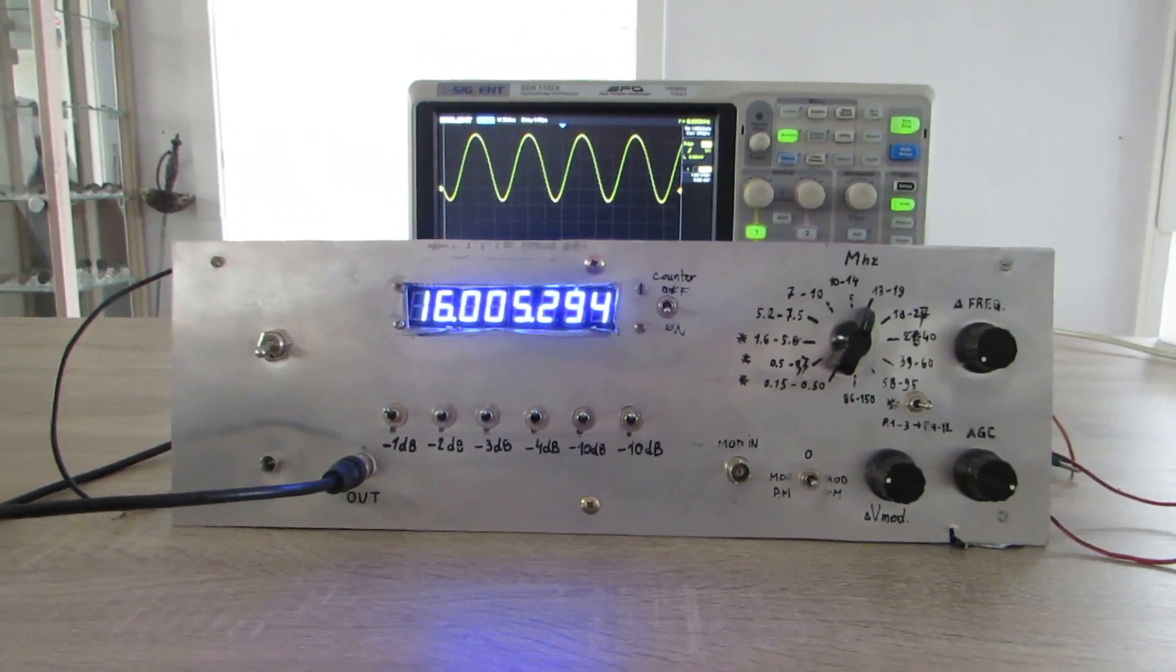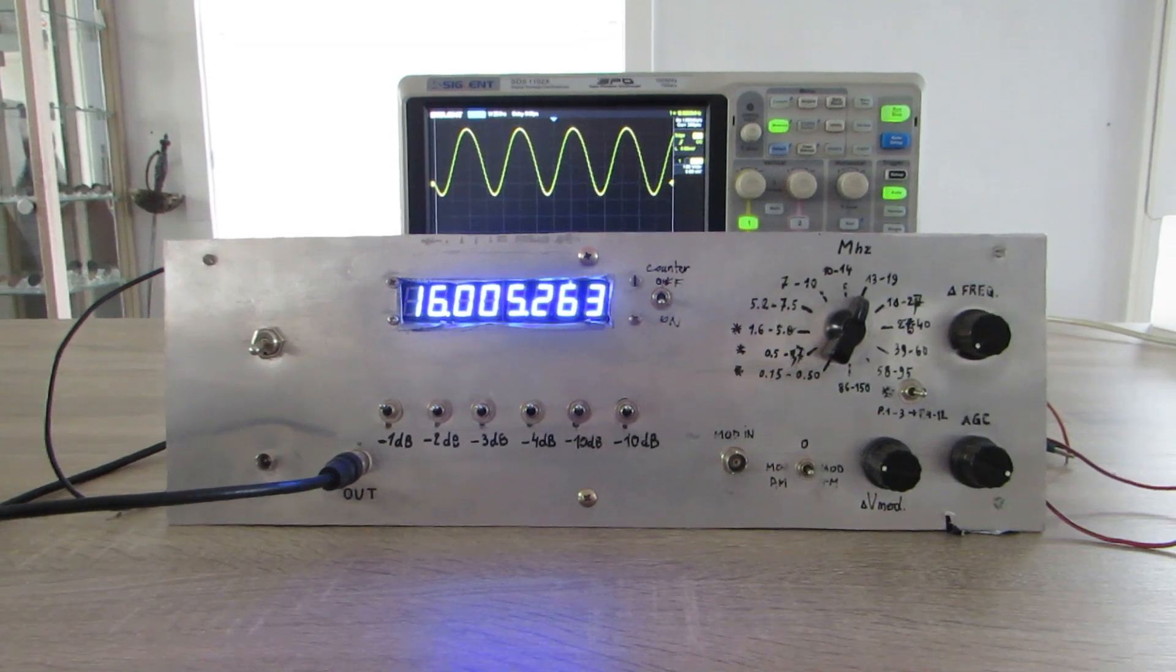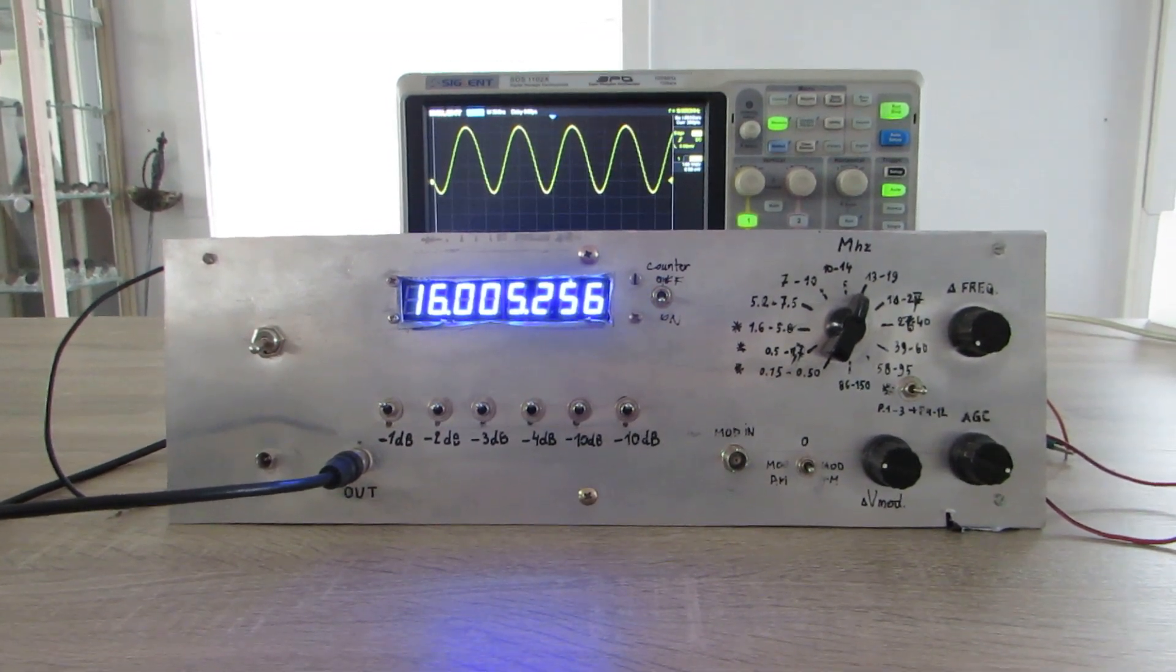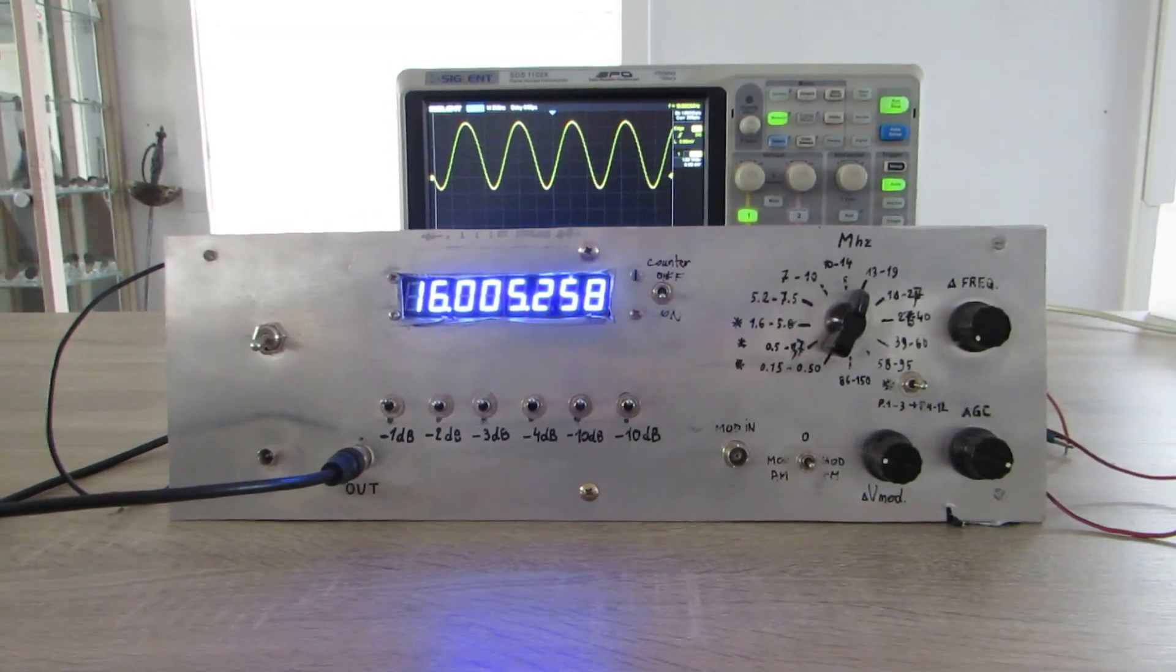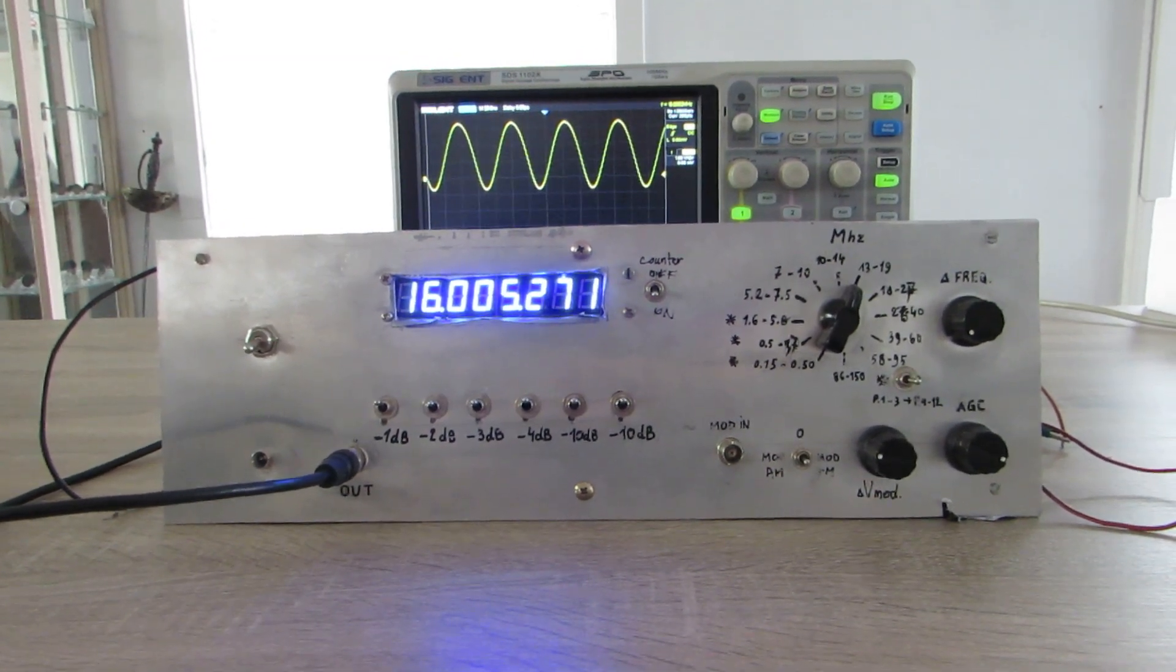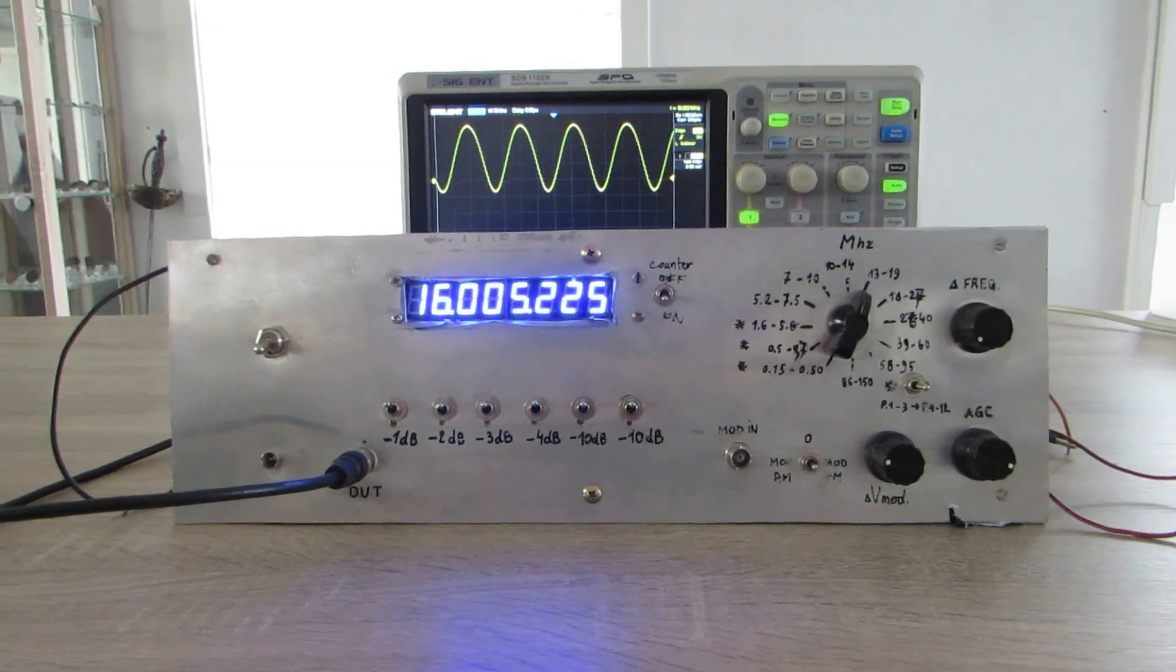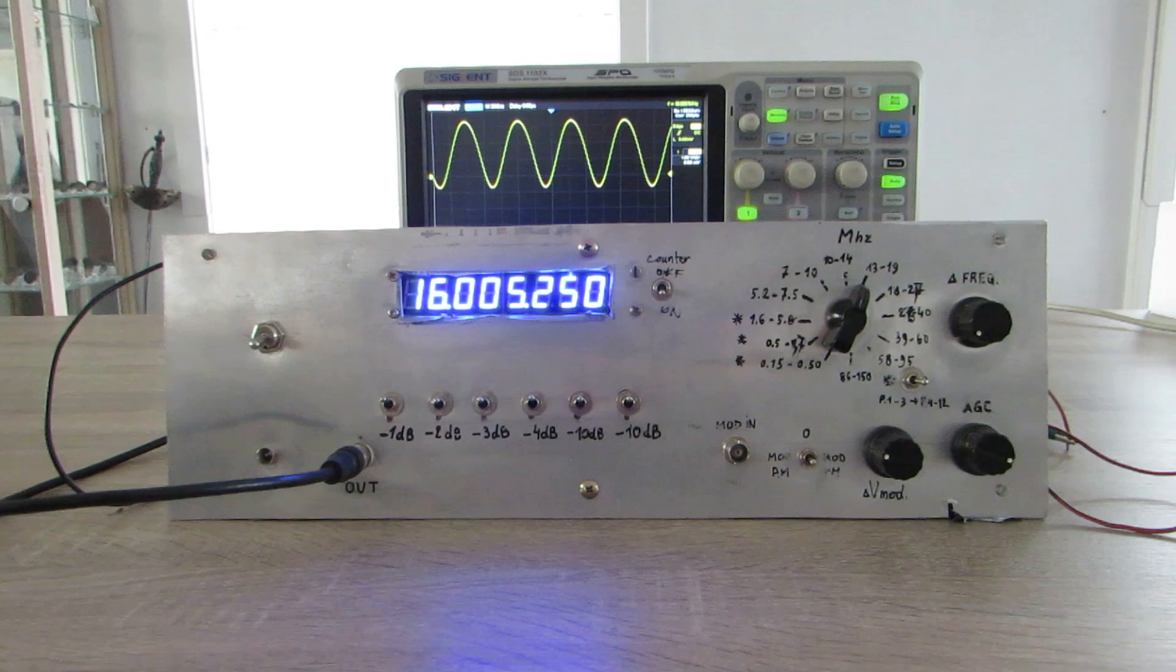To modulate the RF signal in amplitude, the input signal is connected by means of a capacitor to the AGC of the MC1684. To modulate the RF signal in frequency, the input signal is connected by means of a capacitor to the varicaps. You can see that on the schematic I will show you at the end of this video.